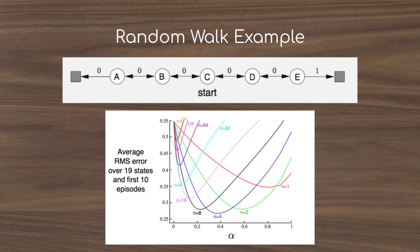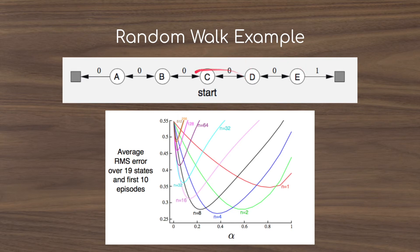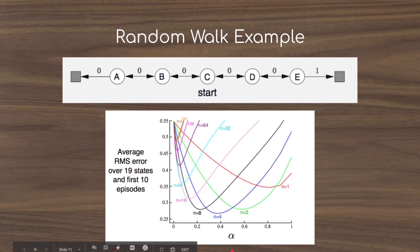The random walk example from chapter 6 shows how n-step TD learning converges faster than one-step TD. With a random left-right policy, reward of one is only received at the right terminal state. Under one-step TD, the signal propagates slowly — E must converge first, then D bootstraps from E, then C from D — taking a long time overall. With two-step TD, C bootstraps by stepping into D and using E's value, converging faster. A graph shows that using a four-step update with a learning rate of about 0.35 achieves the smallest error on the true value estimates.